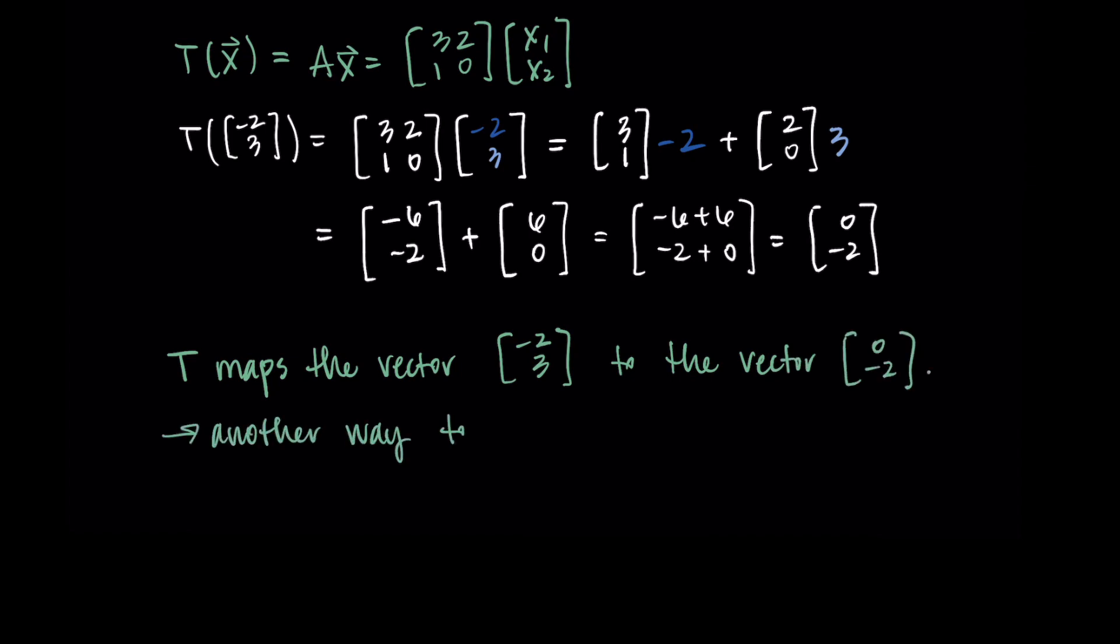Another way to say this is that [0, −2] is the image of [−2, 3] under the transformation T. So what T does is it takes the vector [−2, 3] and sends it to [0, −2]. And we have a bunch of ways to talk about that happening.